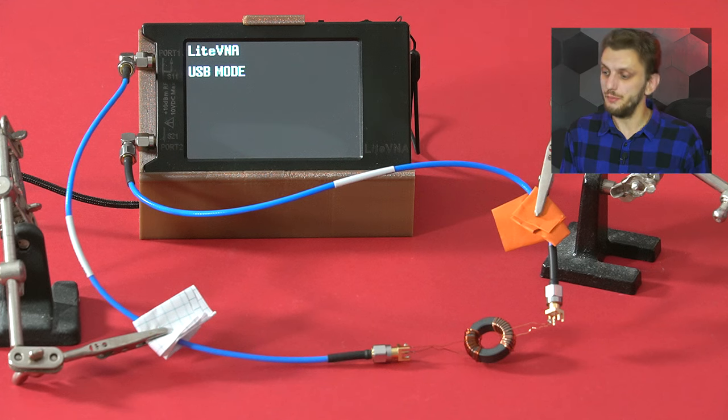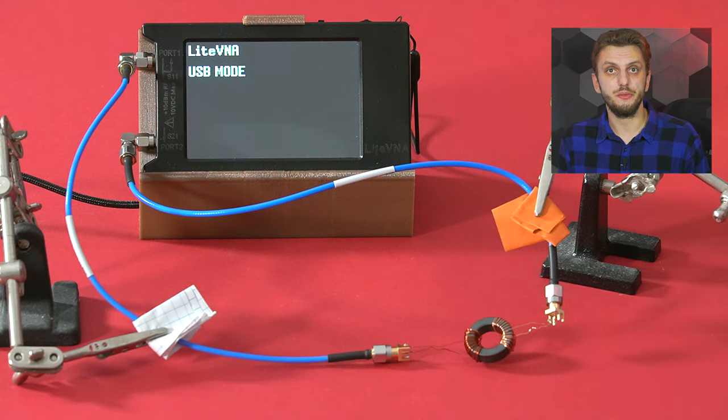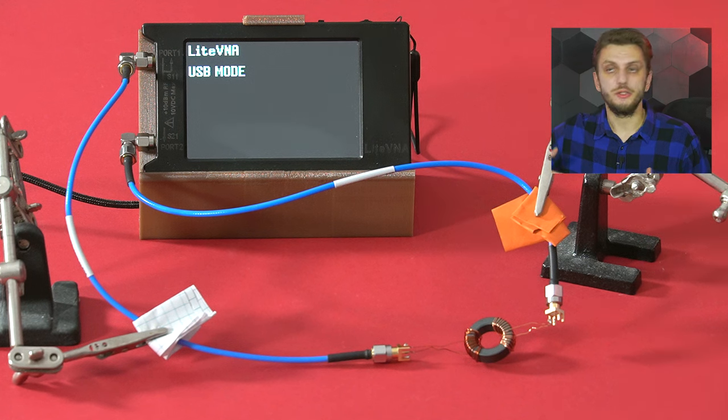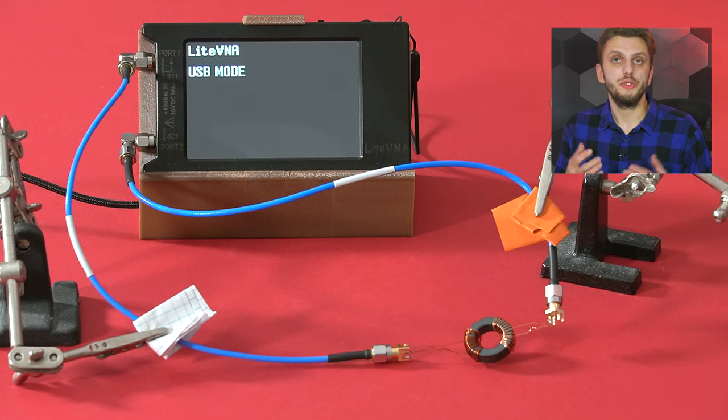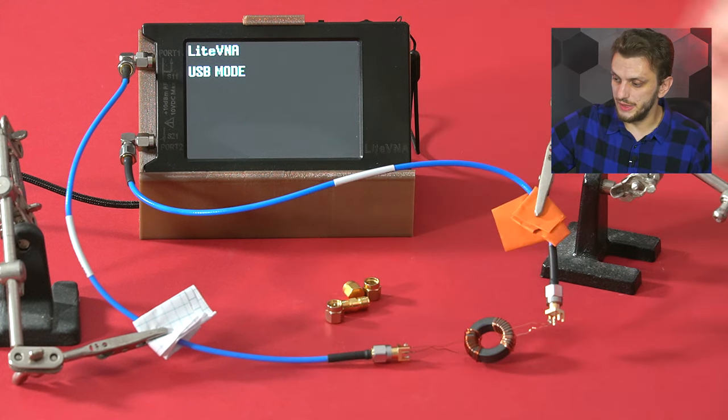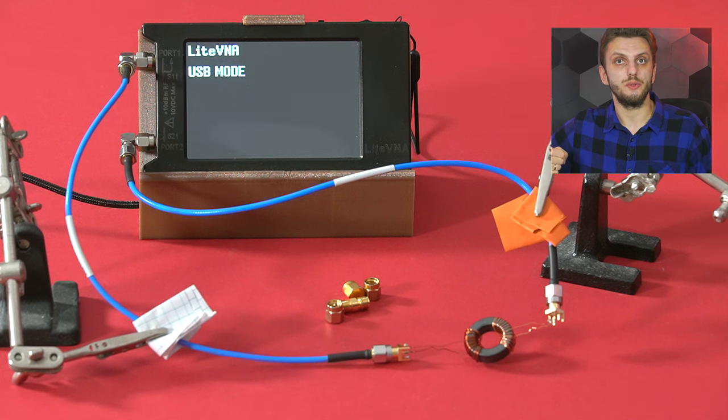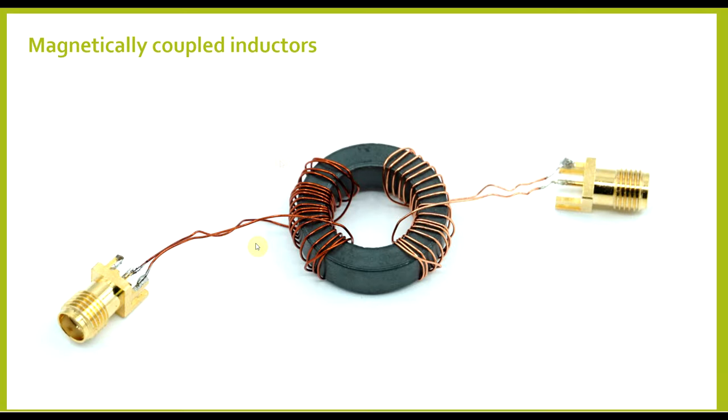So let's see what sort of transformer we can build with such a core. To test this out, I prepared a one-to-one transformer with a clearly separated primary and secondary winding, and I'm measuring this using the light VNA connected directly to the computer. This way you can make more detailed measurements. So after finishing all of the calibrations on the VNA, we can start measuring the transformer to see its useful bandwidth. So here we can see a closer look of our transformer with the two windings completely separated, one from the other, placed on the two opposing sides of the ferrite core.